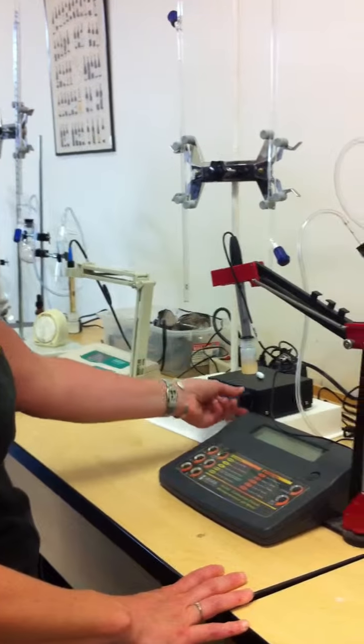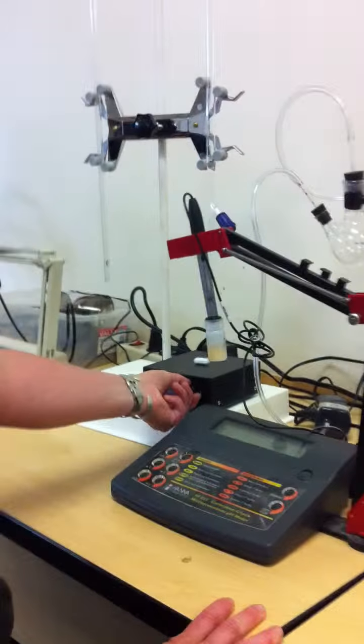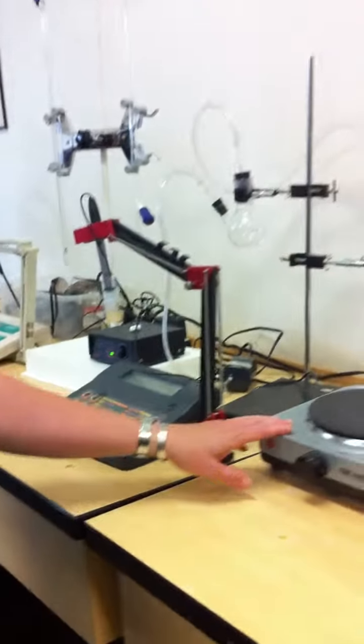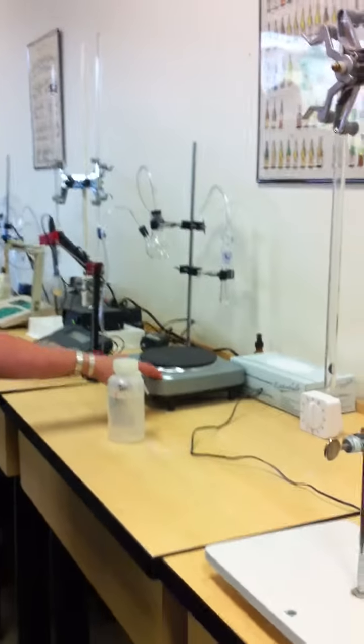And this is a little stirring thing. So you put that in the beaker, and it will stir it up for you. And this is a heater for boiling off CO2 out of wine.